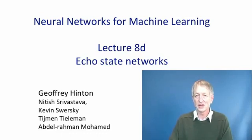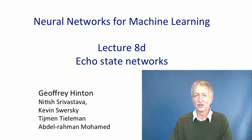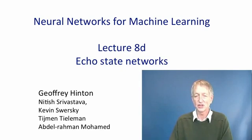In this video, I'm going to describe echo-state networks. These use a clever trick to make it much easier to learn a recurrent neural network. They initialize the connections in the recurrent neural network in such a way that it has a big reservoir of coupled oscillators. If you provide input to it, it converts that input into the states of these oscillators, and then you can predict the output you want from the states of these oscillators. The only thing you have to learn is how to couple the output to the oscillators. This entirely gets rid of the problem of learning hidden-to-hidden connections or even input-to-hidden connections.